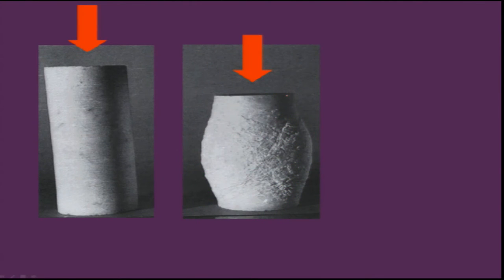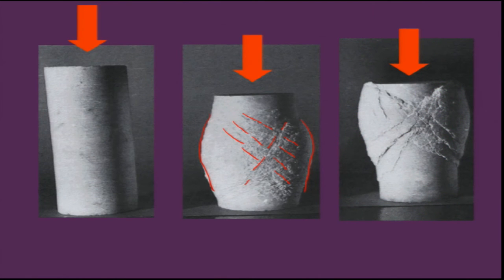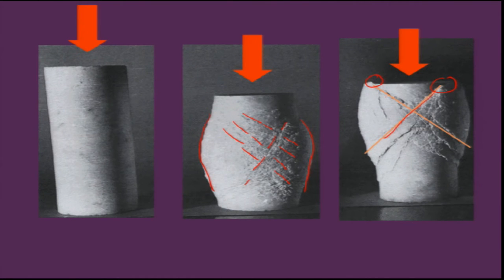For example, if you take a rock block and apply pressure, it will initially deform, and then faint lines appear — these are the weak zones forming within it, just as they do within the Earth. If you keep applying force, it will break and you will see a displacement. This displacement is preserved on the surface whenever it occurs, and what we observe is either a fracture, conjugate joints, or in a broader sense, a fault.